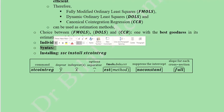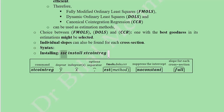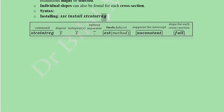Now we come to the syntax. First we need to know how to install this command, because it is not part of the standard package of Stata — it is a user-defined command. The keyword is: ssc install xtcointreg. Here, 'xt' stands for panel, 'coint' stands for cointegration, and 'reg' stands for regression.